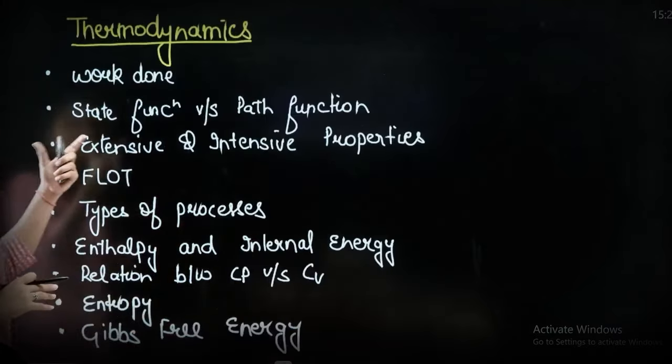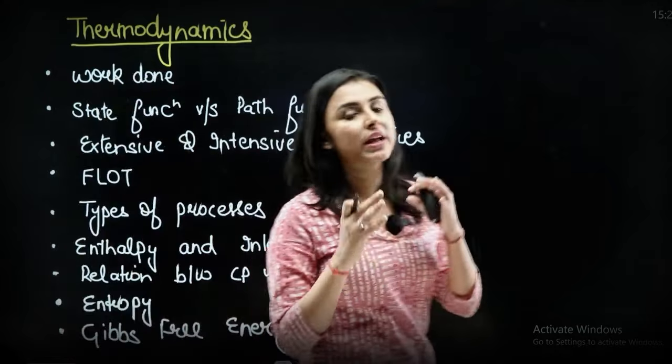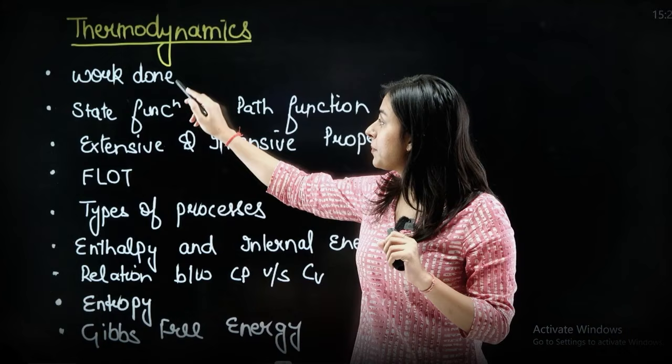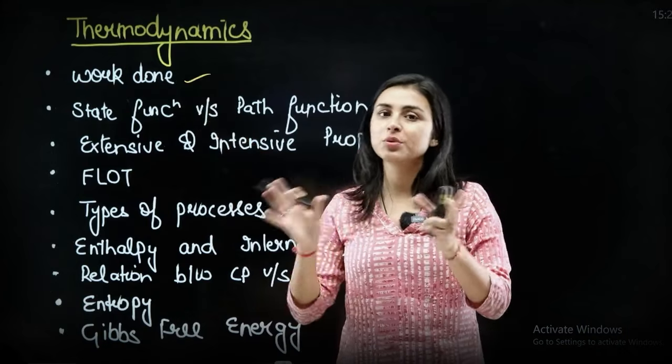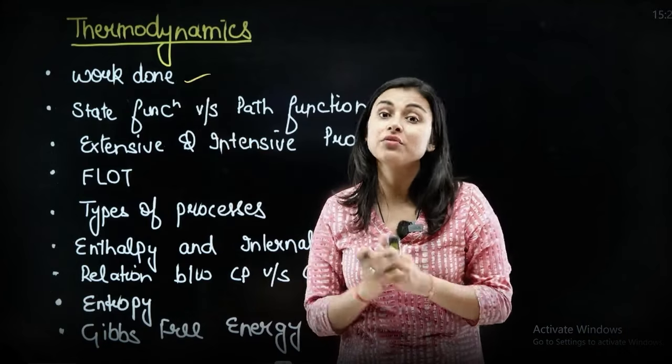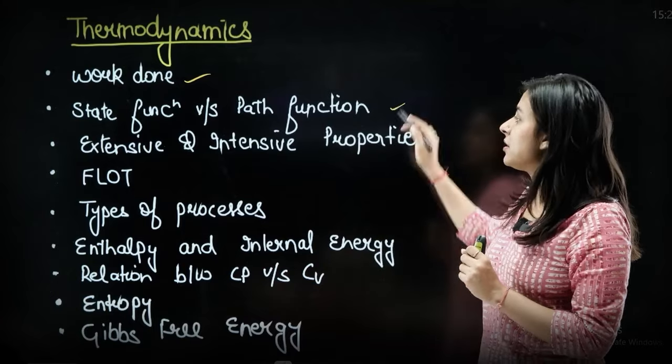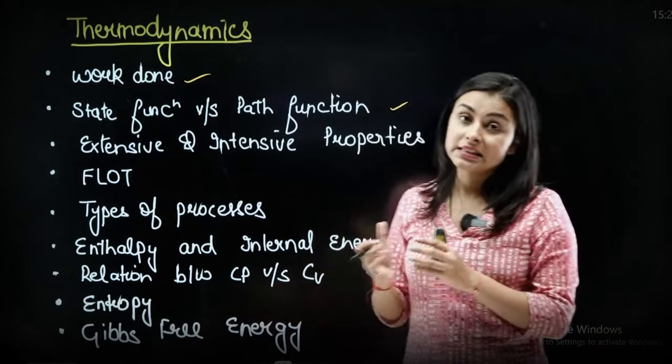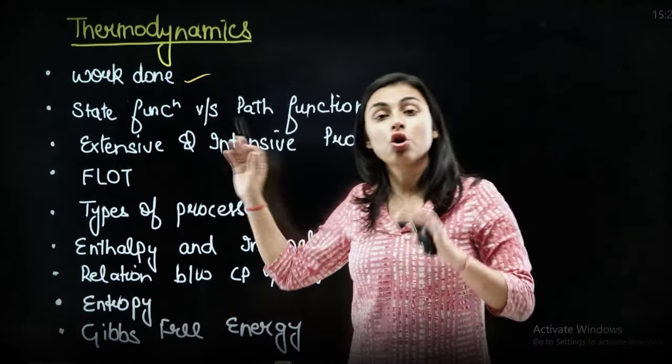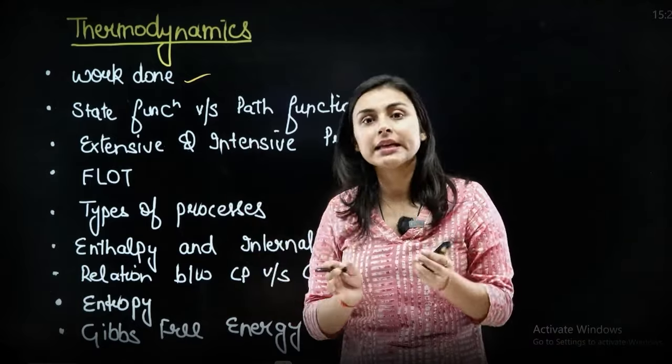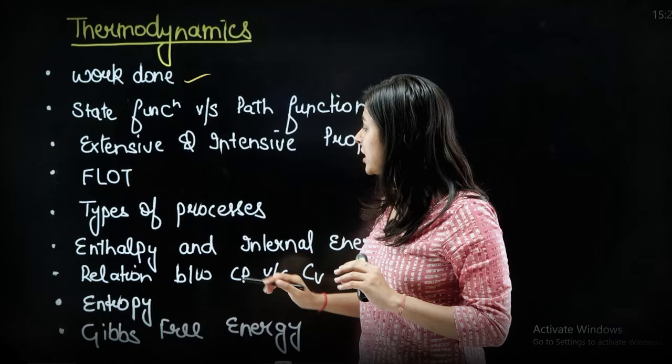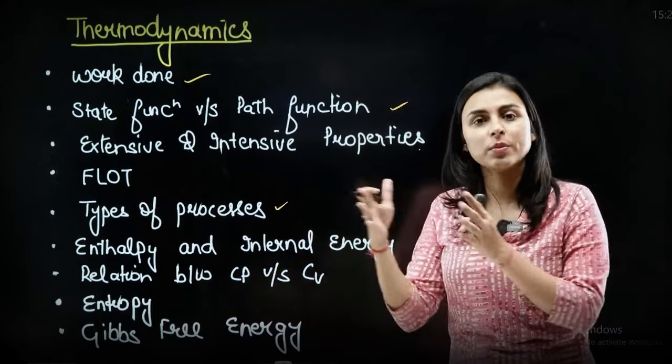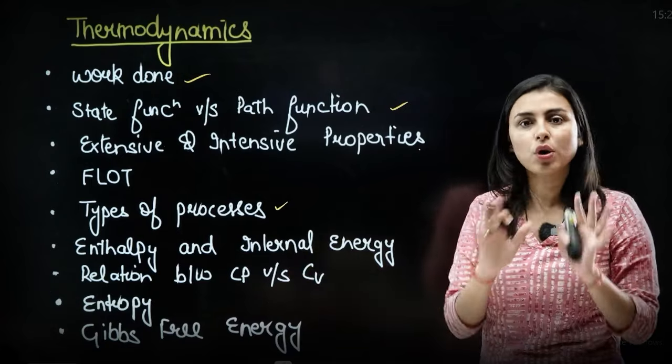Next, if we talk about the chapter, that is my dear students, your thermodynamics. Thermodynamics is a very important chapter. Which topics are important? First of all, work done: reversible, irreversible work done. The general formulas are important for you. Next, state function versus path function is important. Intensive, extensive properties is important for you. First law of thermodynamics, if the question comes from it, then it should be clear to you. Types of processes, which are four different types of processes: isothermal, isobaric, isochoric, adiabatic, that should be clear to you.